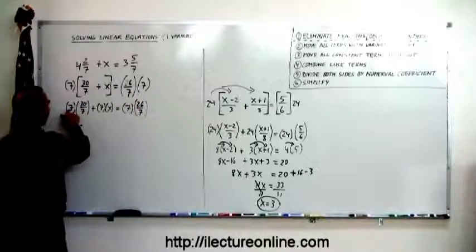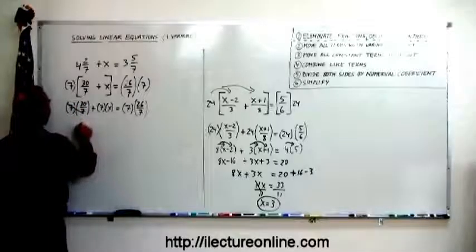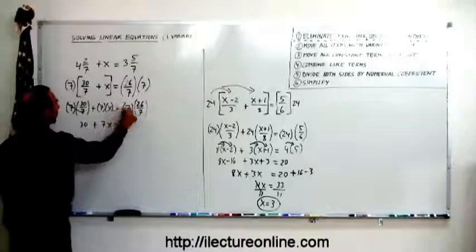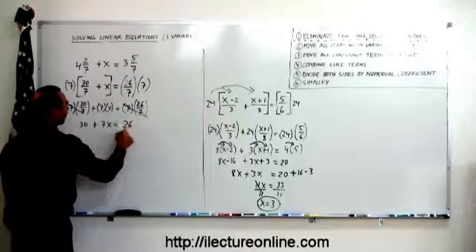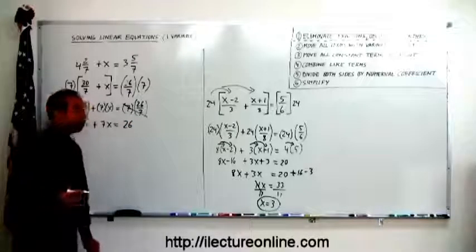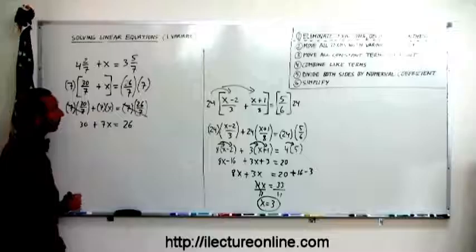Now, 7 divided by 7, that cancels out, so we're left with 30, plus 7x equals 7 divided by 7 cancels, so we're left with 26. And now we have a simple linear equation that we can solve using our typical methods.